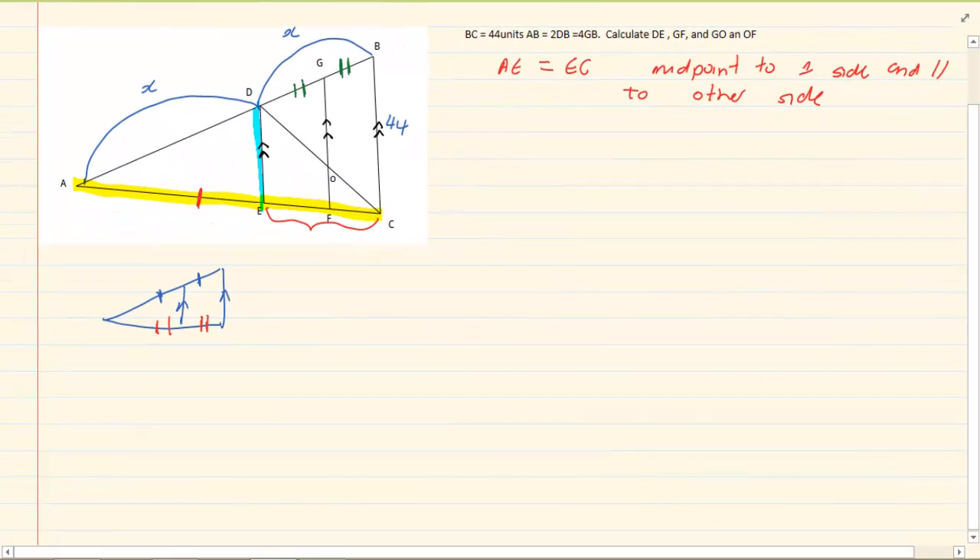Now let's go on to the question. They are asking us to calculate DE. Now if you're looking at the triangle, let us look at the yellow triangle. So we're ignoring everything else. If you look at the yellow triangle,